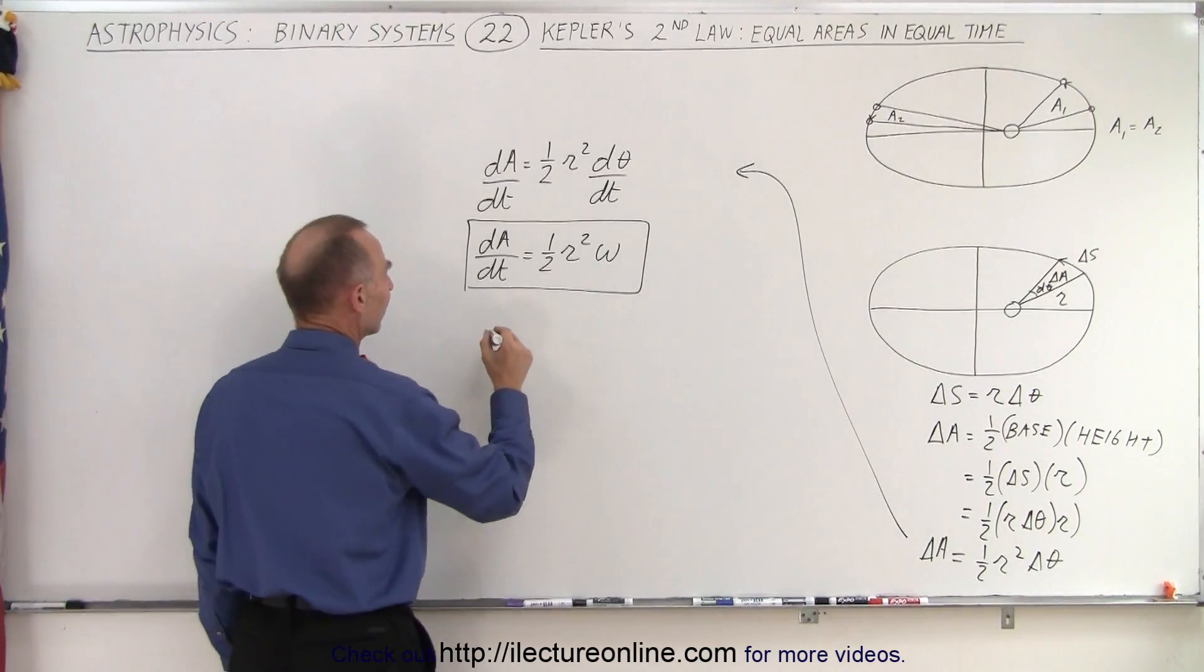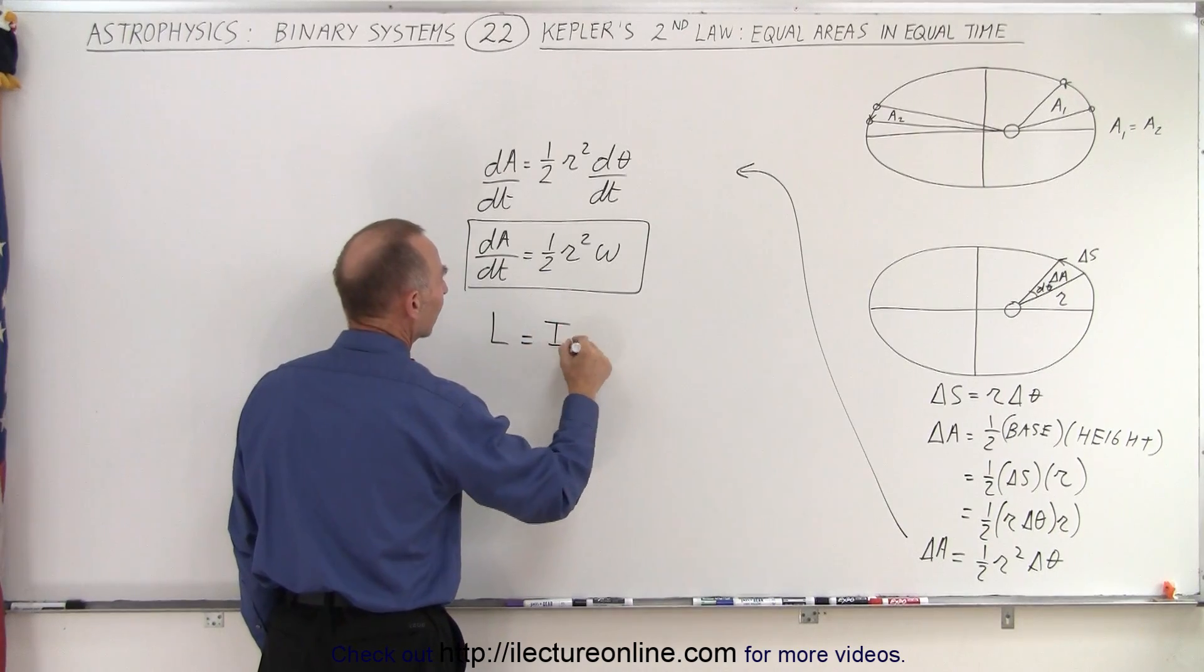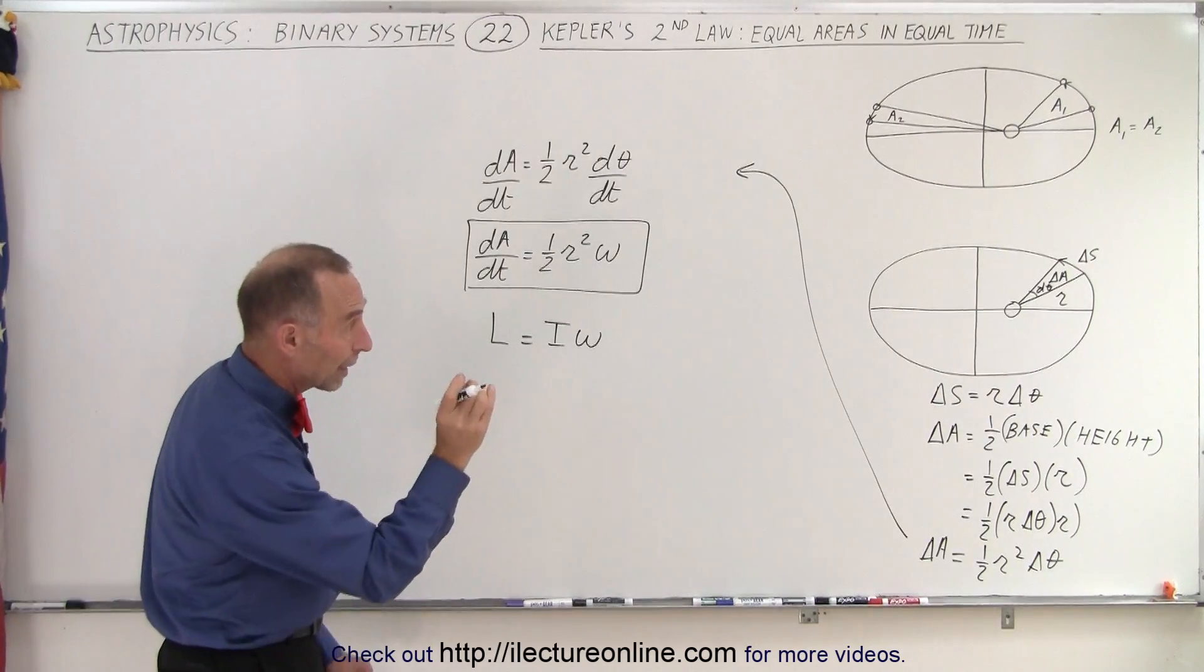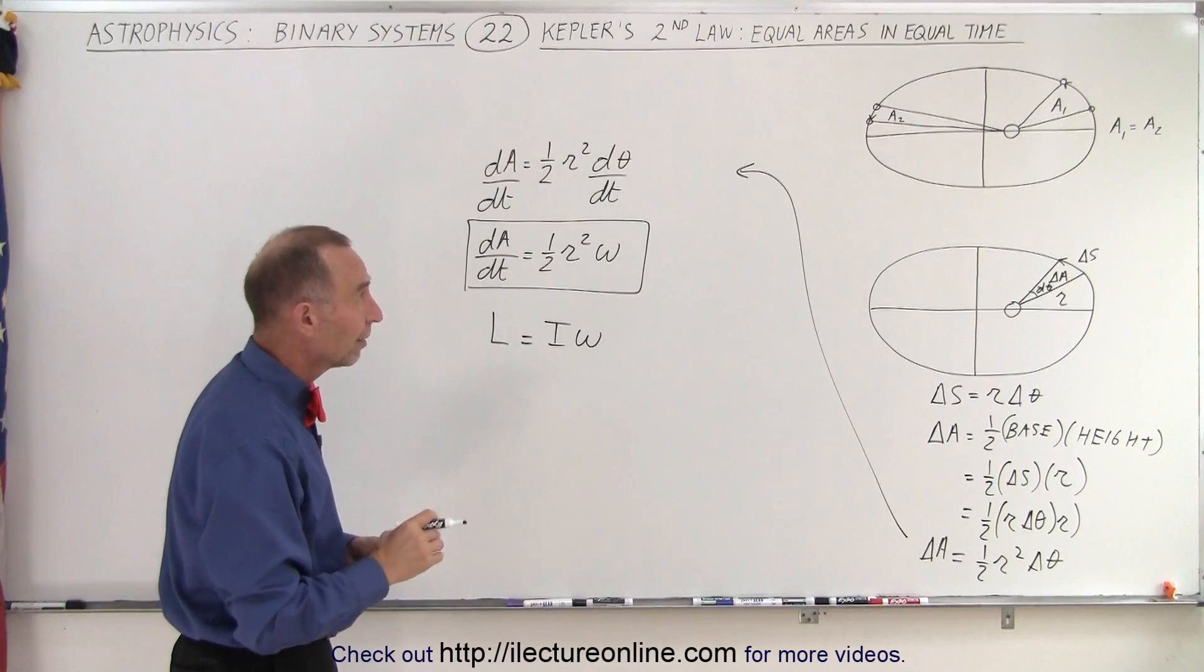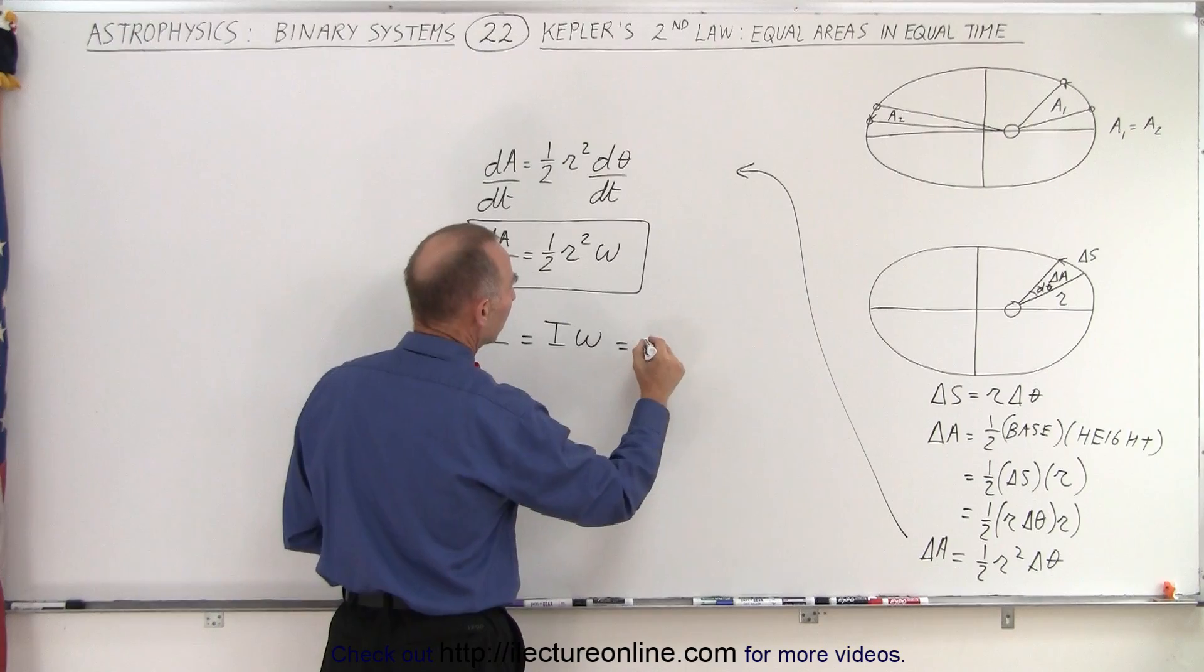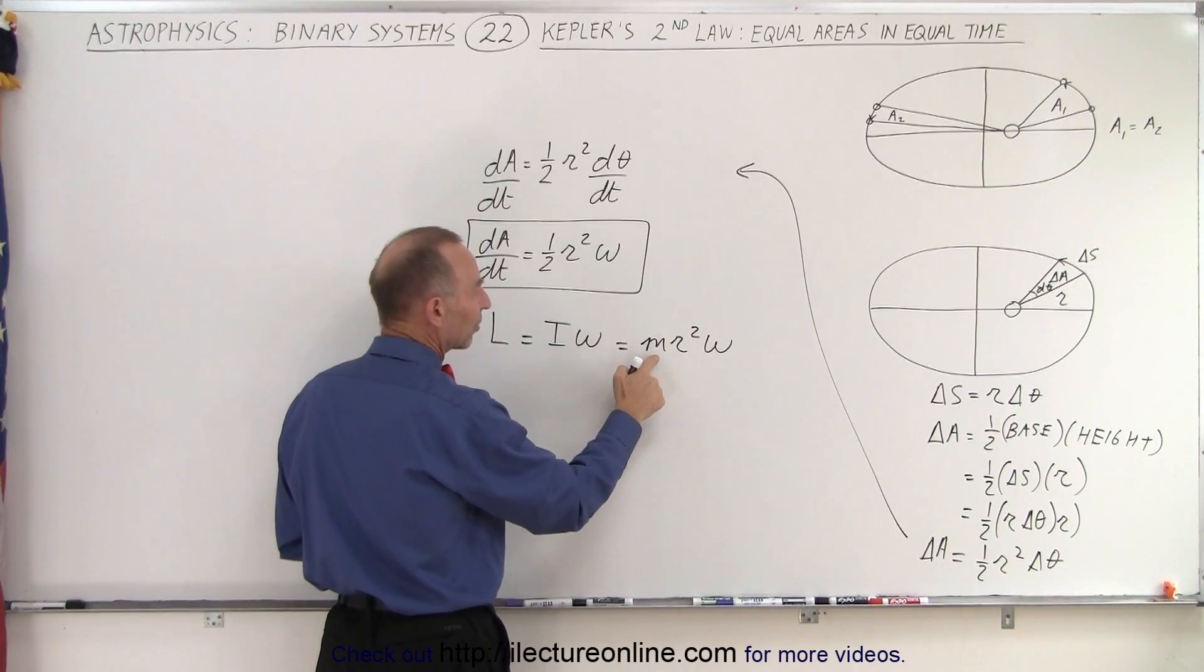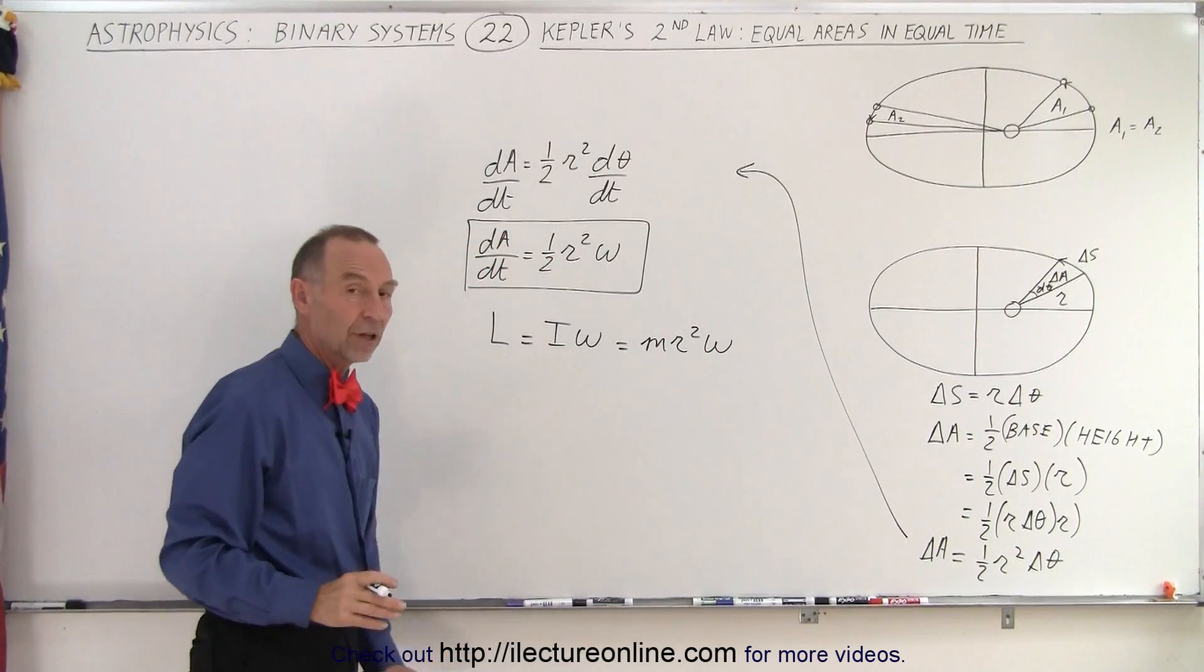Then what we can also say is that the angular momentum is going to be equal to I times omega, I being the moment of inertia of the planet times omega. Now I, for a point object, which a planet would be a point object at a distance r away from the center of motion, which is the star or the sun, this would be equal to m r squared times omega. So I would be simply a point mass m, the mass of the planet, times the radius squared, and multiplied times the angular velocity.